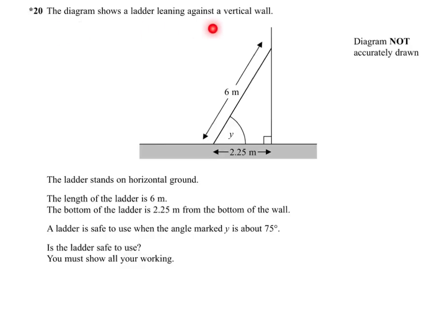The diagram shows a ladder leaning against a vertical wall. The ladder stands on horizontal ground. The length of the ladder is 6 meters. The bottom of the ladder is 2.25 meters from the bottom of the wall.